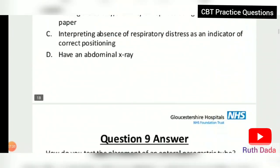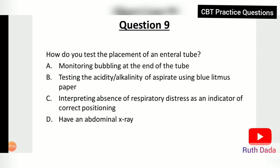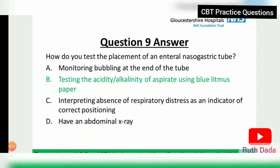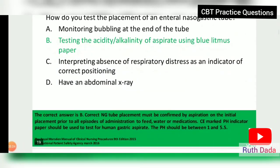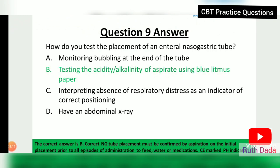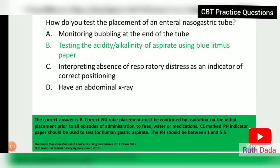Question 9: How do you test the placement of an enteral tube? Testing the acidity or alkalinity of aspirates is the correct approach. An abdominal X-ray will not give a reliable result, but a chest X-ray can help confirm NG tube placement. NG tube placement must be confirmed by aspiration on initial placement and prior to each episode of administration of feeds, water, or medication.